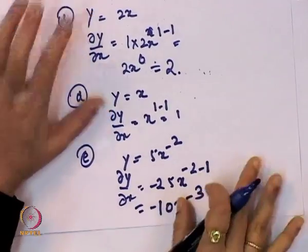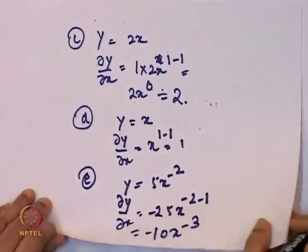So this is how we solve when we have a power function. The functional form has a power which can take any value — less than 0 or greater than 0.